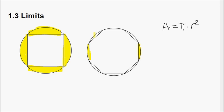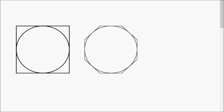So the area of the circle is the maximum — the limit, we call it — the limit for this area of the polygon. Now let's take this concept from the other perspective.